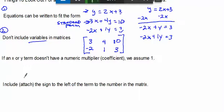And the last thing is, make sure you include or attach the sign to the left of the term to the number in the matrix. So you notice here that this was a negative 2x. Make sure that that negative is part of the number that you put into the matrix.